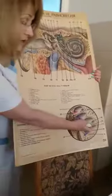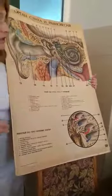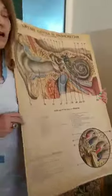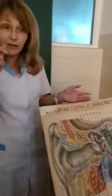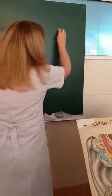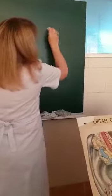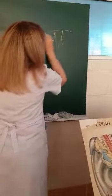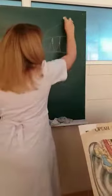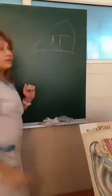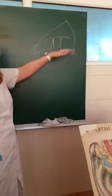Special receptor cells of the acoustic analyzer are epithelial cells with villi on their upper surface. These villi are in contact with the membrana tectoria in the endolymphatic ductus cochlearis.